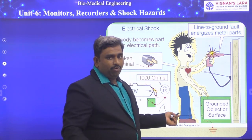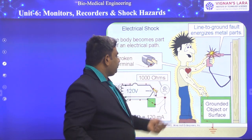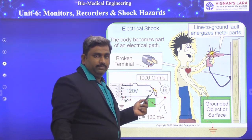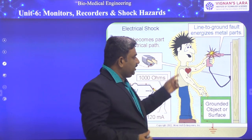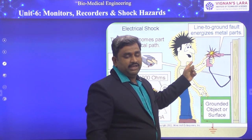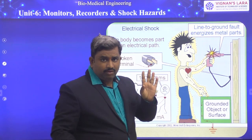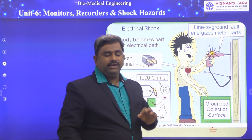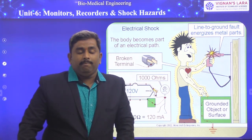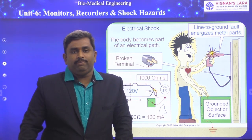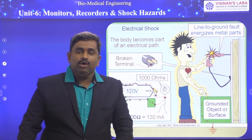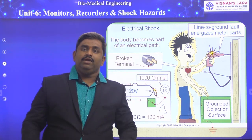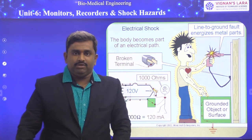If proper grounding is not available, then the patient is going to be shocked. When operating, the equipment is connected with only neutral and line conductor. Generally electrical leakage will be there in every equipment, but the leakages have to be grounded. That means we have to provide a grounding path. If you are not providing the grounding path, then it will take your body as the grounding path.